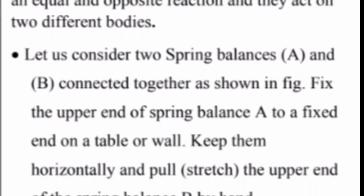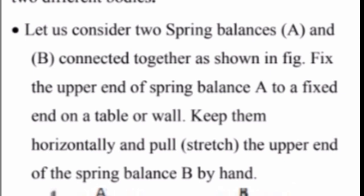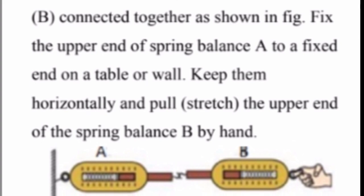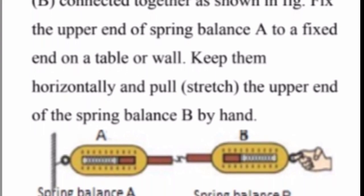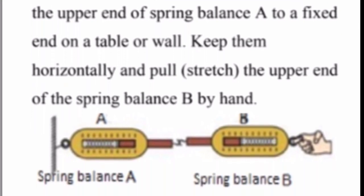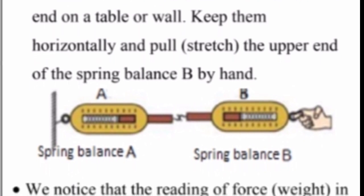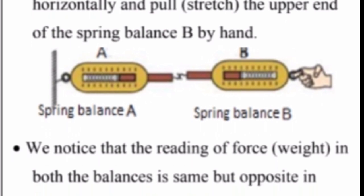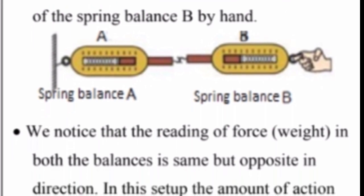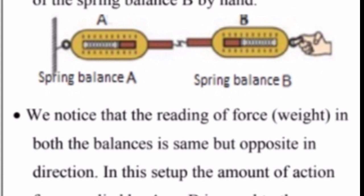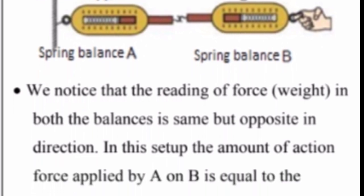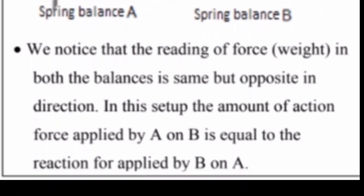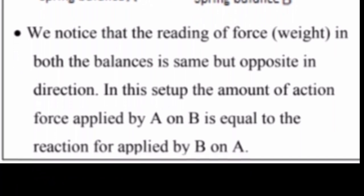Let us consider two spring balances A and B connected together as shown in the figure. Fix the upper end of spring balance A to a fixed end on a table or wall, keep them horizontally, and pull the upper end of spring balance B by hand. We notice that the reading of the force in both the balances is the same but opposite in direction. In this setup, the amount of action force applied by A on B is equal to the reaction force applied by B on A.